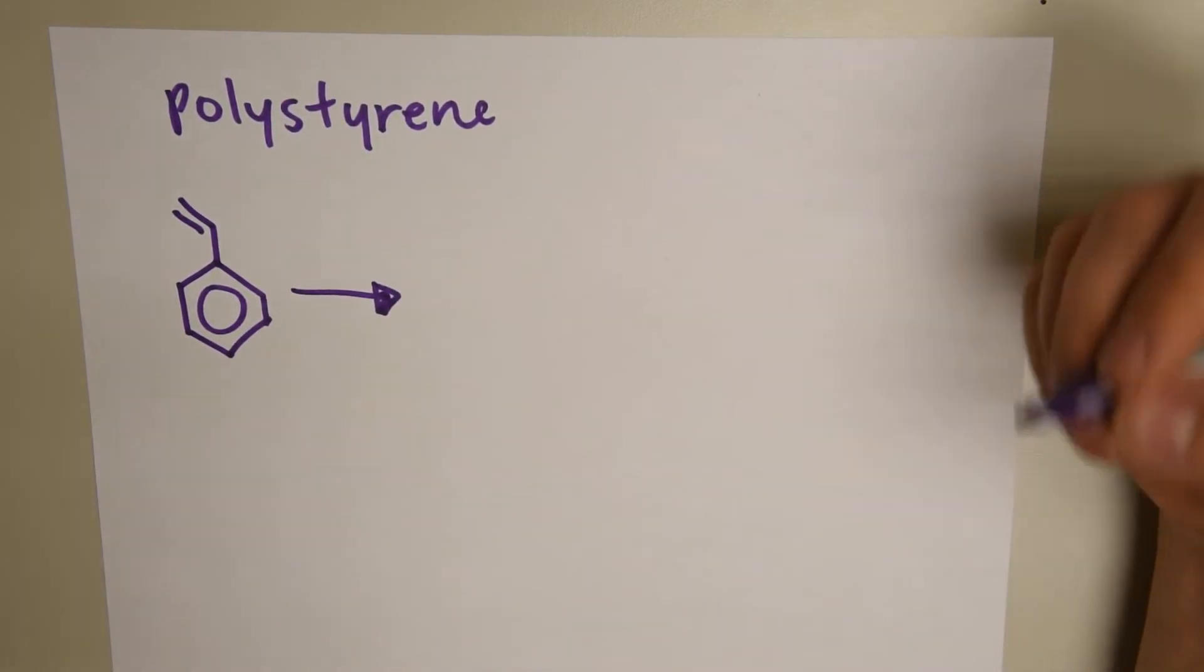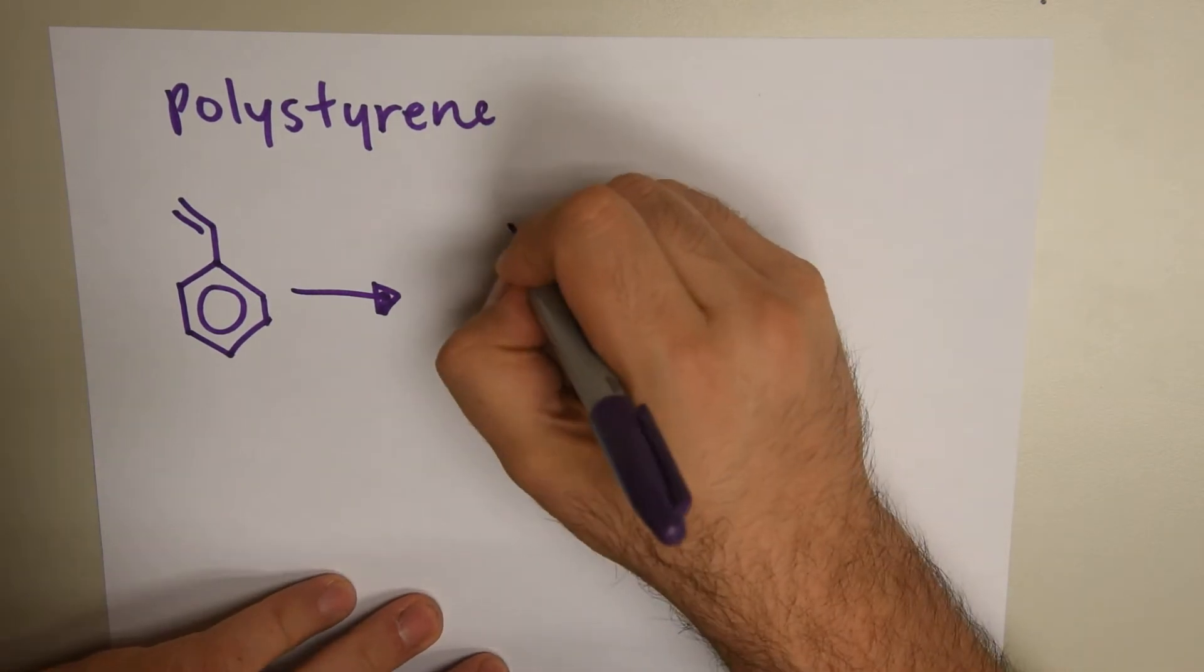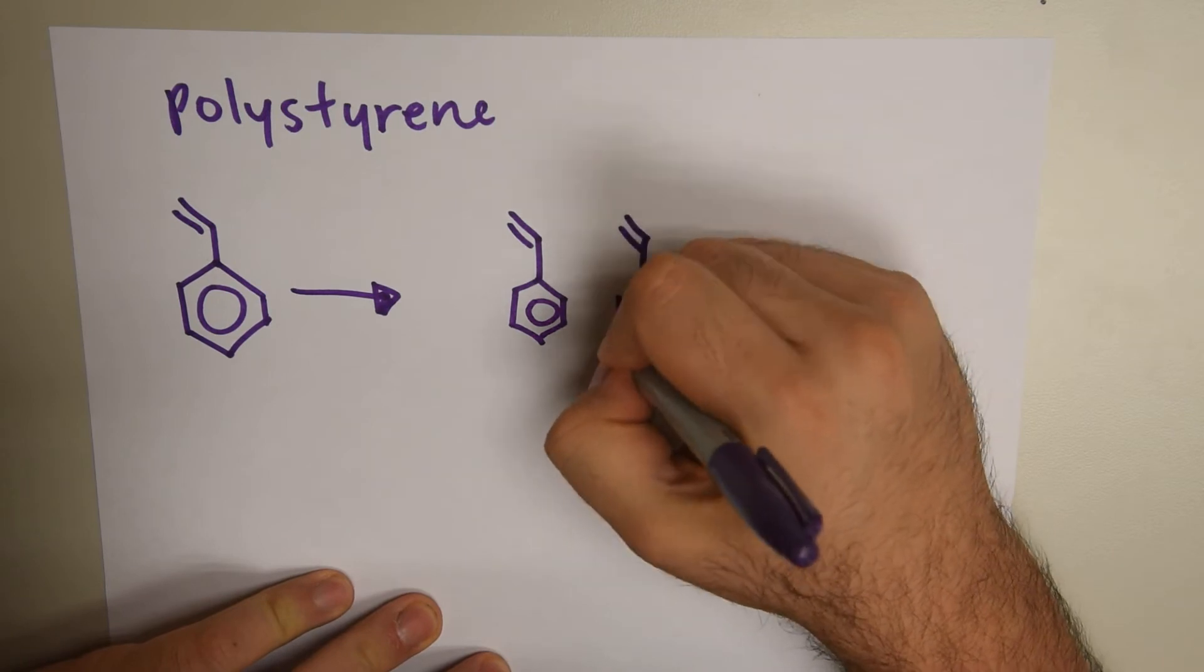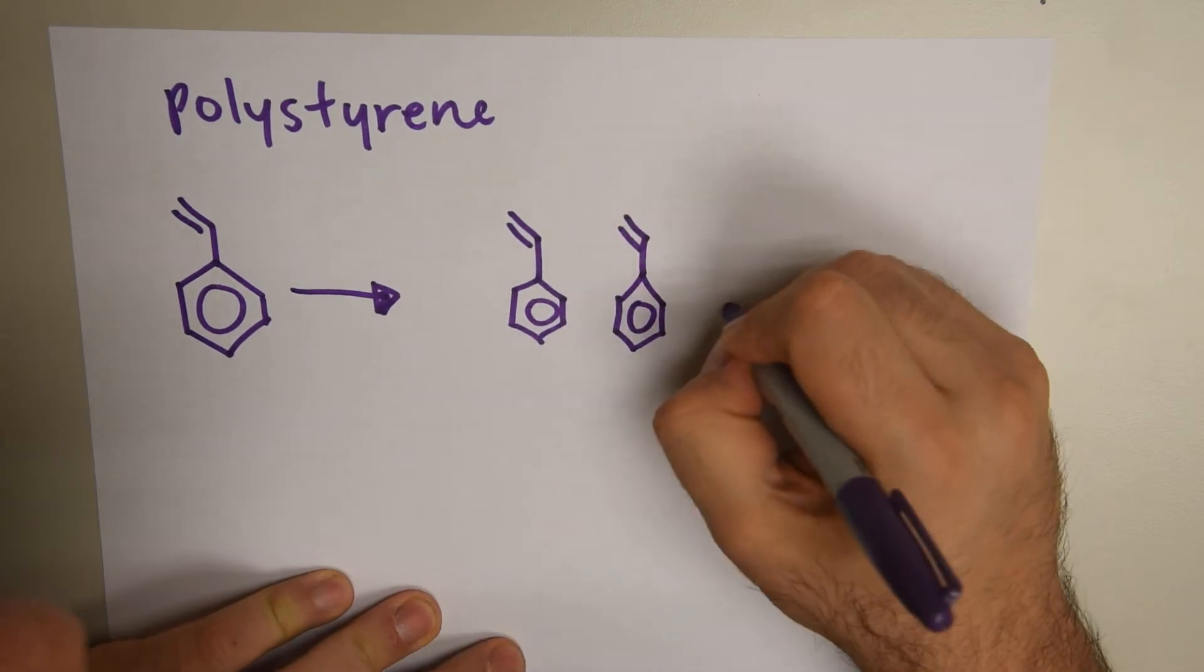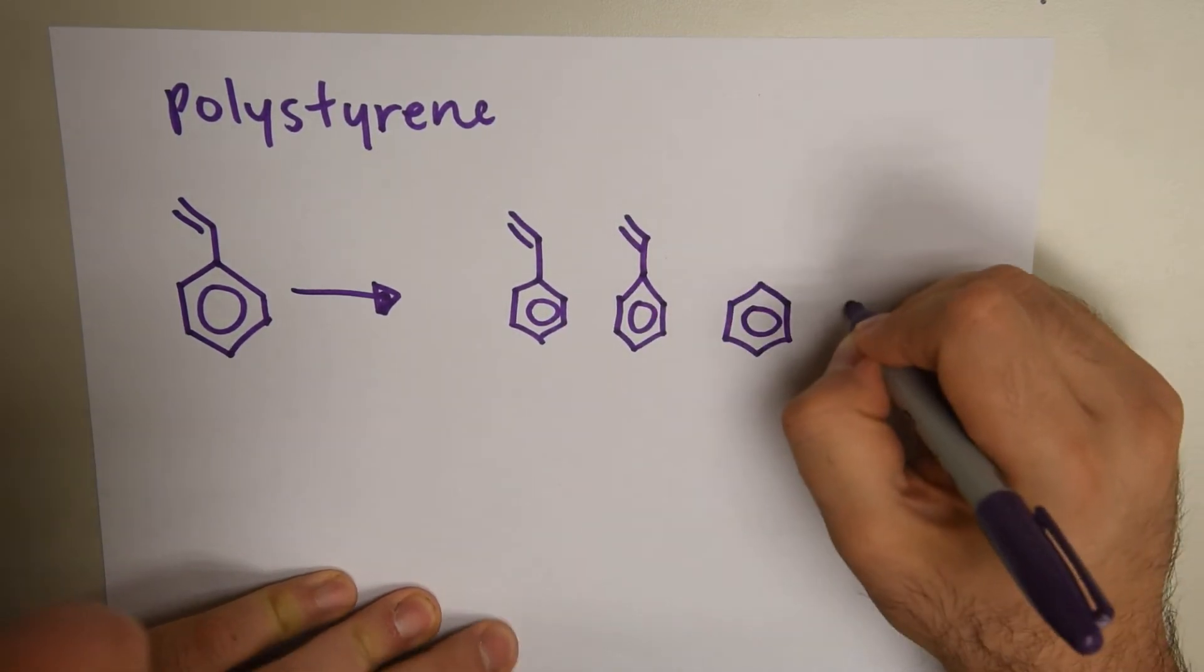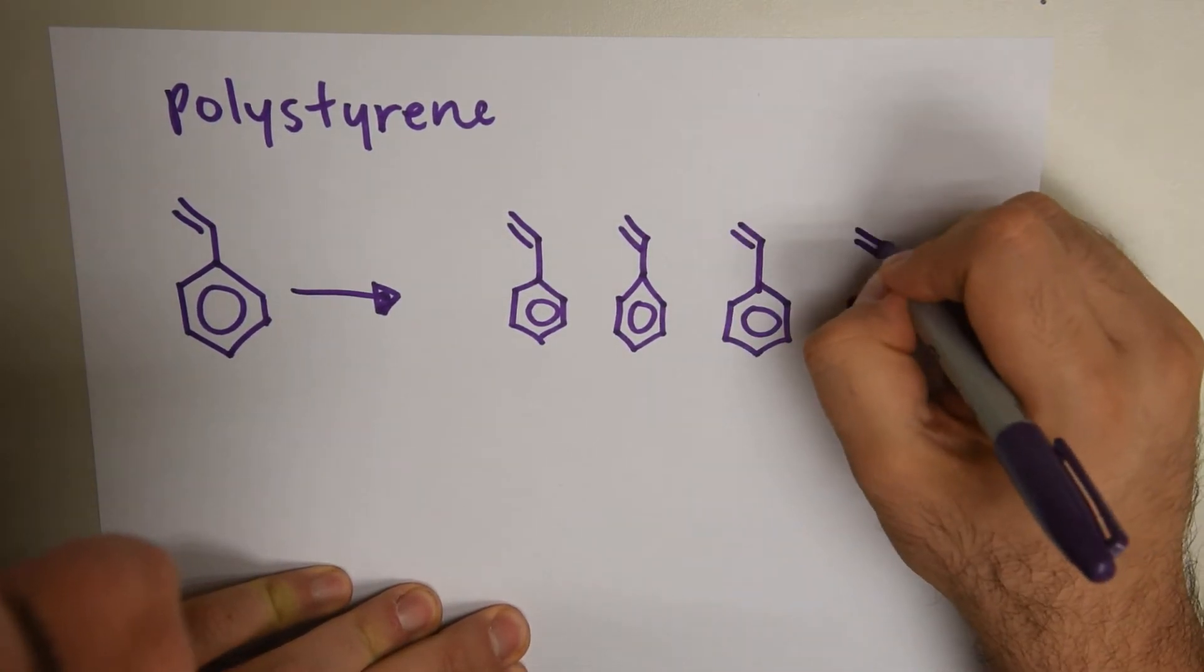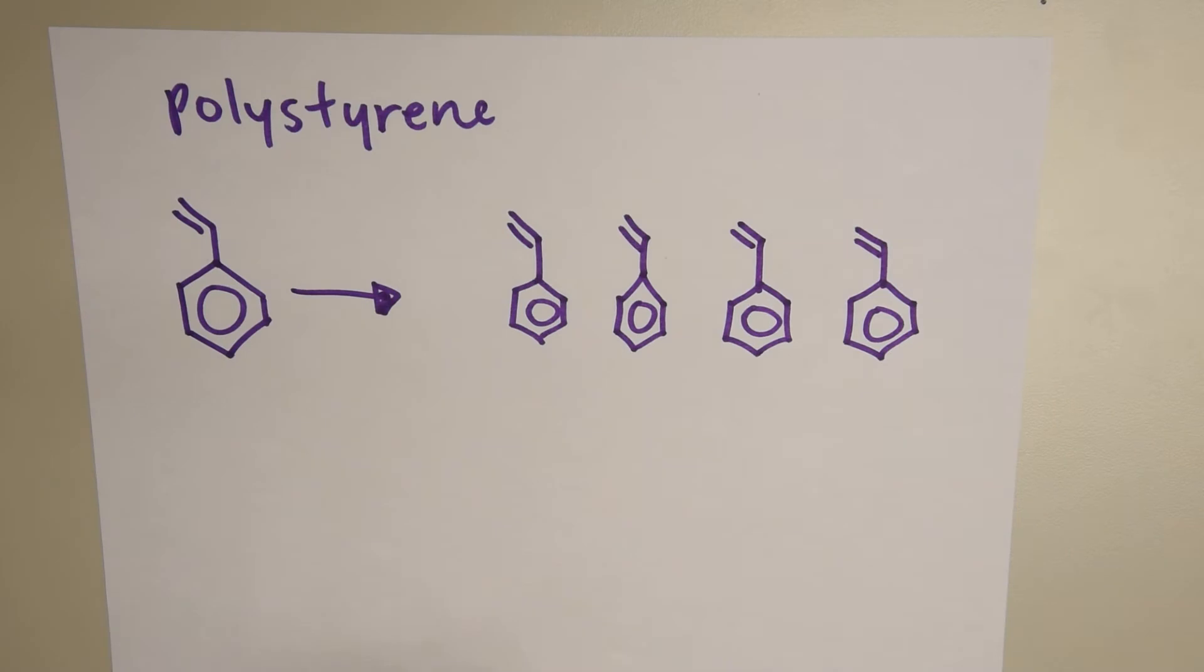So, again, we're going to break that double bond. We're going to line up our styrene molecules right here. And I always like to draw four to imply that this is repeating.